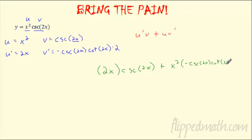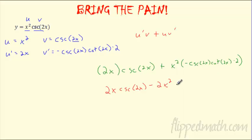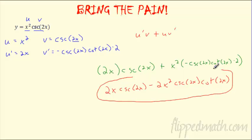Product rule says u′v + uv′. So plugging in: u′ is 2x, v is cosecant(2x), plus u which is x² times v′ which is that whole thing — negative cosecant(2x) · cotangent(2x) · 2. Cleaning up: the first part is 2x · csc(2x). The negative from v′ makes it a subtraction, bringing the 2 out front gives minus 2x² · csc(2x) · cot(2x). We can get some crazy-looking answers with product or quotient rule. Don't freak out — just follow the rules and plug and chug.